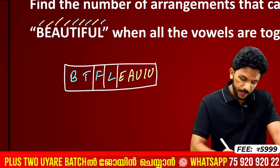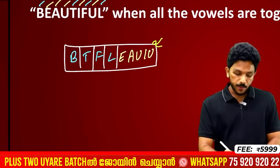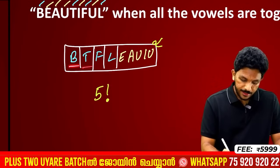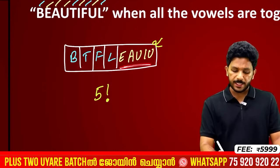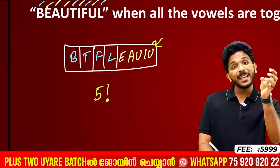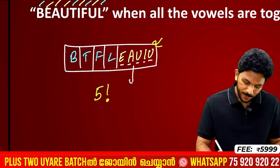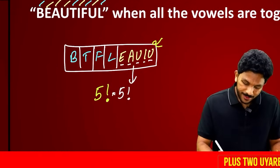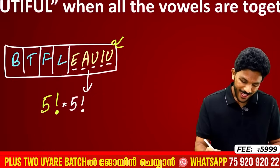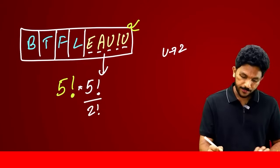We want vowels together — treat the 5 vowels as one block. Together with the 4 consonants, we have 5 units total, giving 5 factorial arrangements. The vowels E, A, U, I, U can arrange among themselves in 5 factorial ways, but U is repeated, so we divide by 2 factorial.